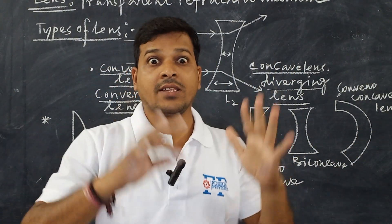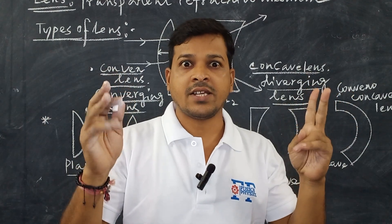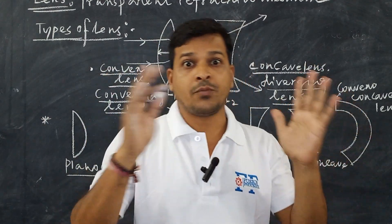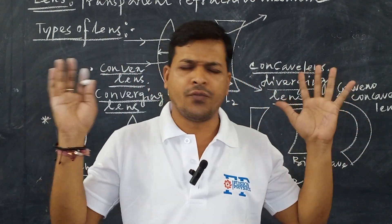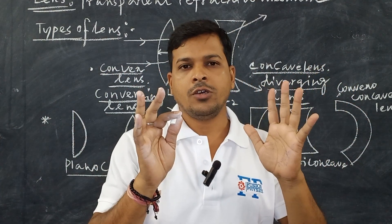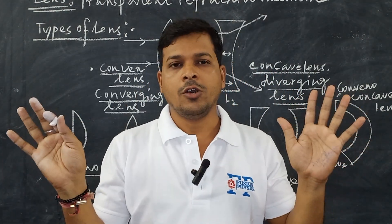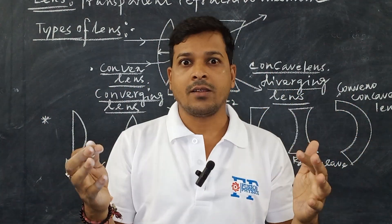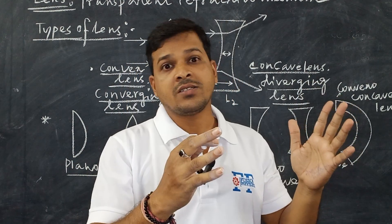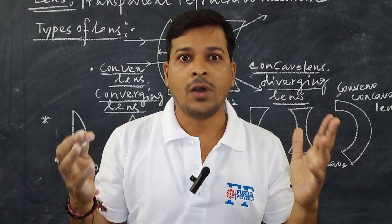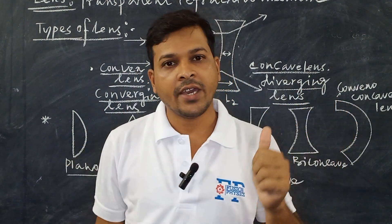In the next video, we will learn two more important parts of the lens: the optical centre and the principal focus of the lens, which are very commonly found in the Madhyamik question paper.